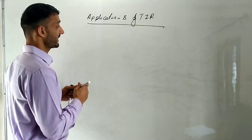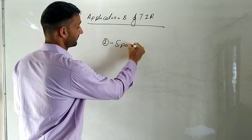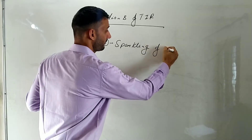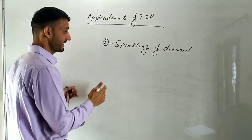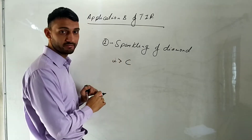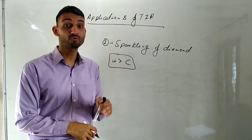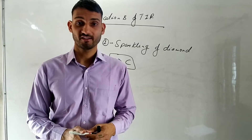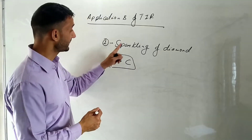In applications of TIR, we have two applications. One is the sparkling of diamond. As we discovered in the last class, the angle of incidence is greater than the critical angle whenever TIR takes place. So light does not move out of the medium — it remains in the same medium and reflects back in the same medium.